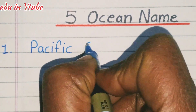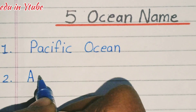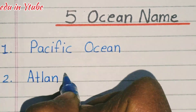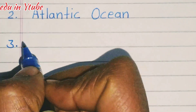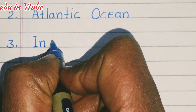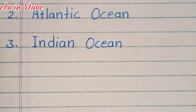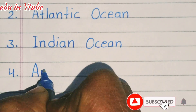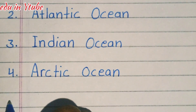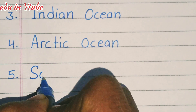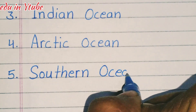First is Pacific Ocean. Second is Atlantic Ocean. Third is Indian Ocean. Fourth is Arctic Ocean. Fifth is Southern Ocean.